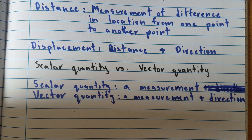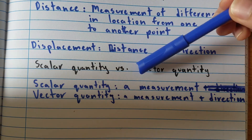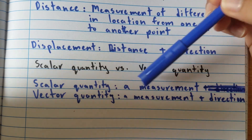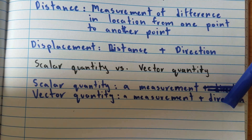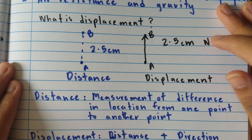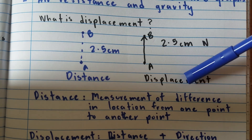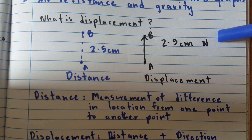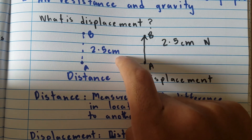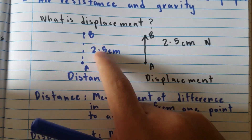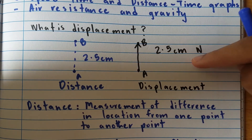Now that we know the difference between distance and displacement, let's talk about scalar and vector quantities. A scalar quantity is a measurement without a direction, while a vector quantity has both a measurement and a direction. Distance is a scalar quantity — we only have a measurement of 2.5 centimeters with no direction. Displacement is a vector quantity because we have 2.5 centimeters north, with a direction specified.